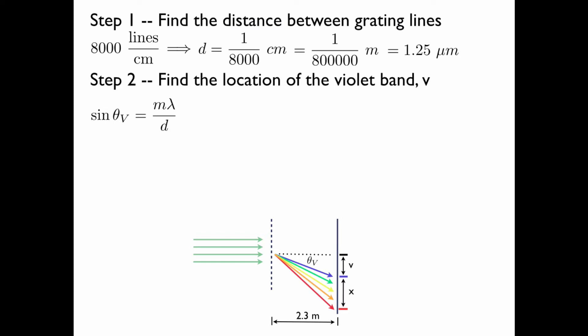This is the relationship between the angle, the wavelength, the spacing between the grating lines, and the order spectra that you're looking at. We can solve for the angle.